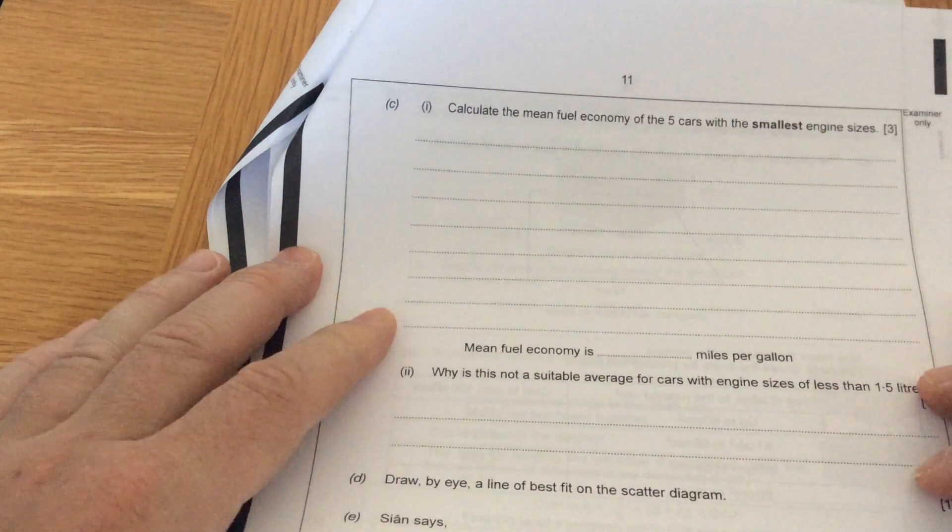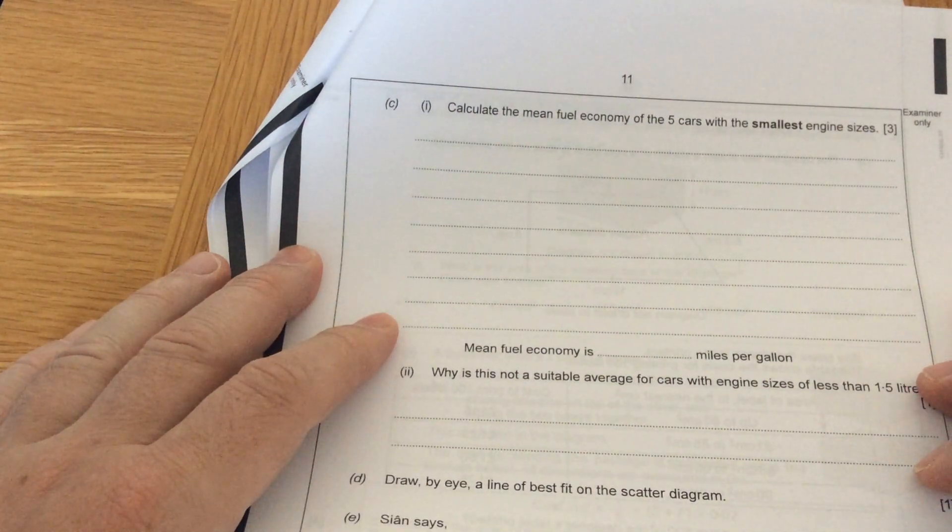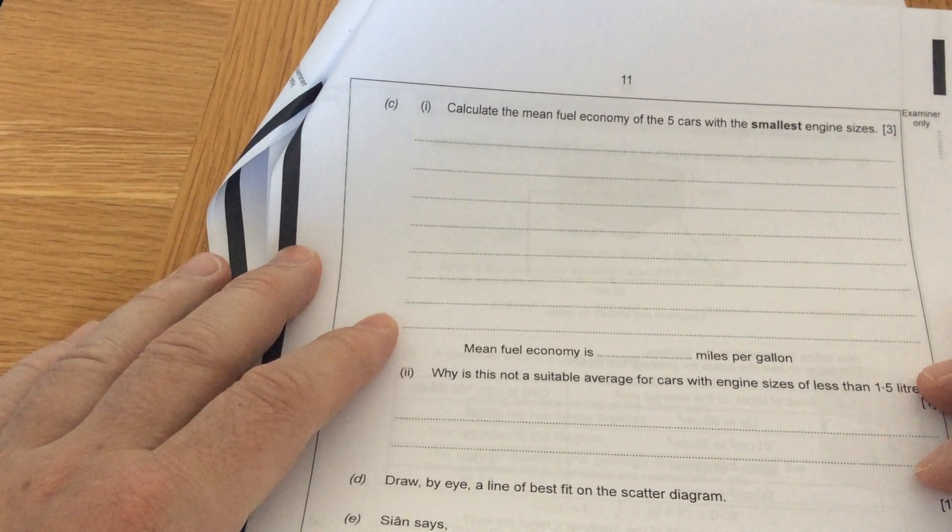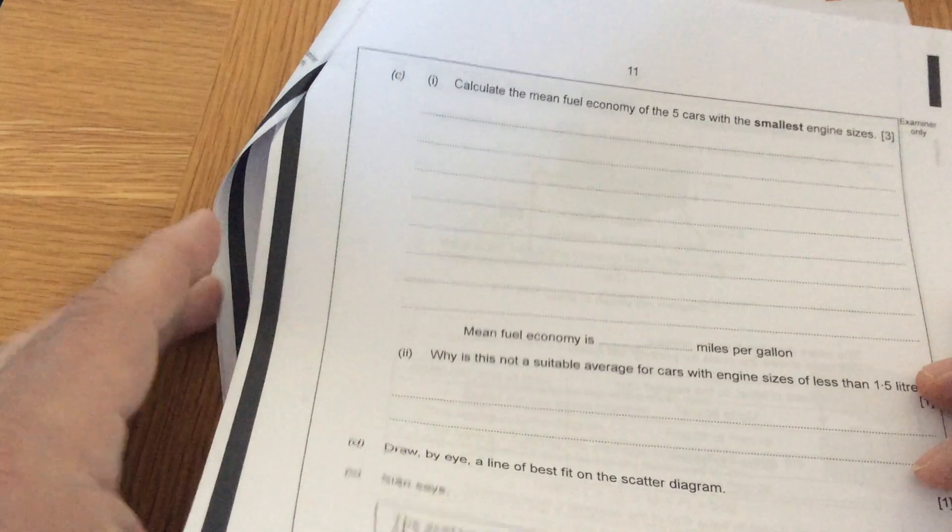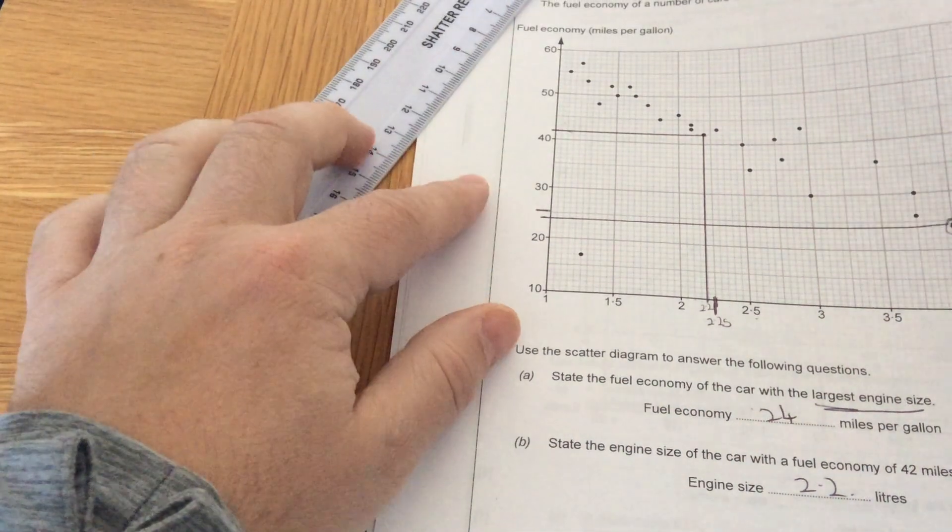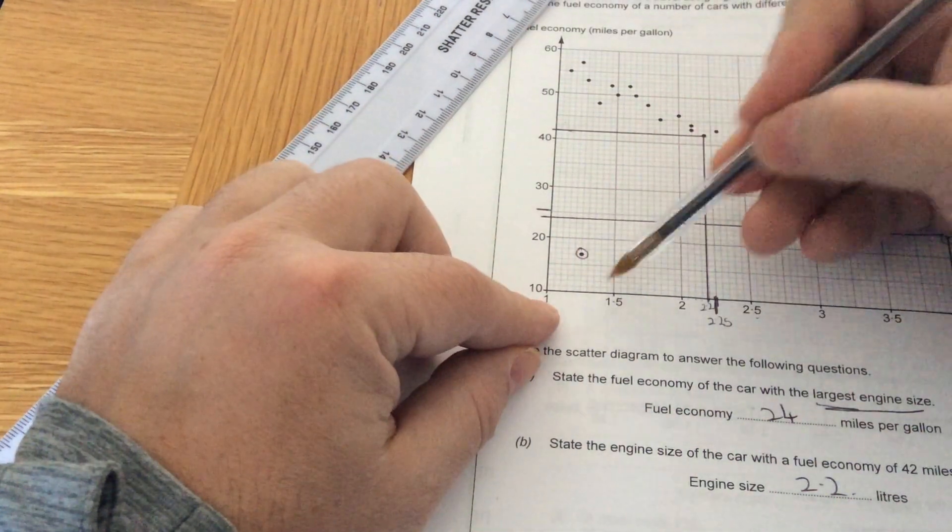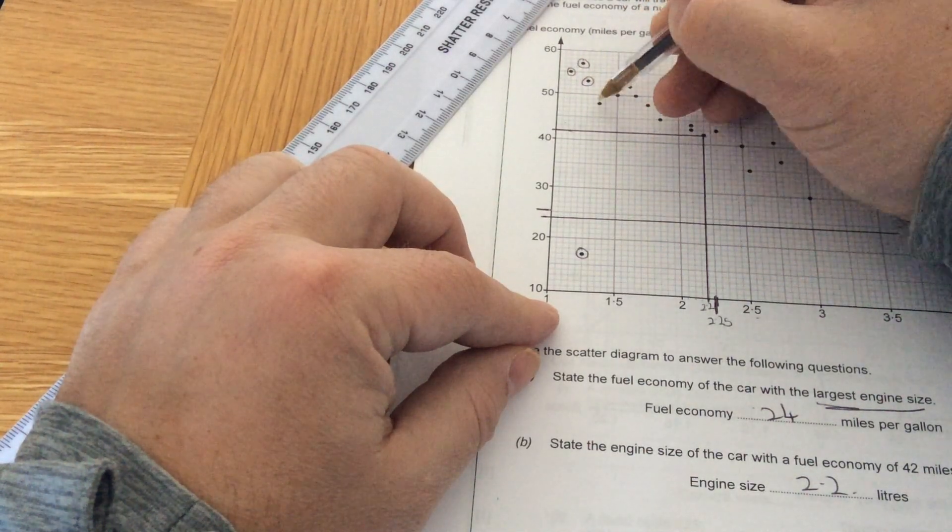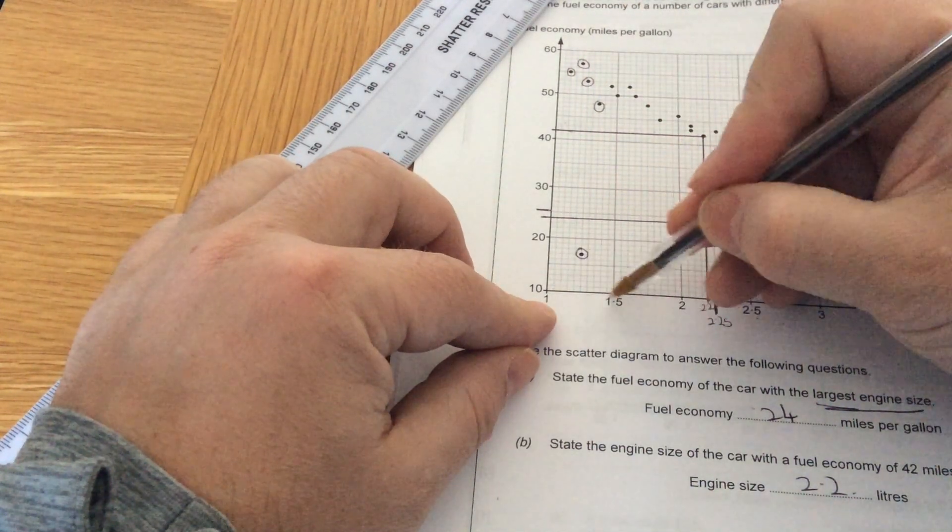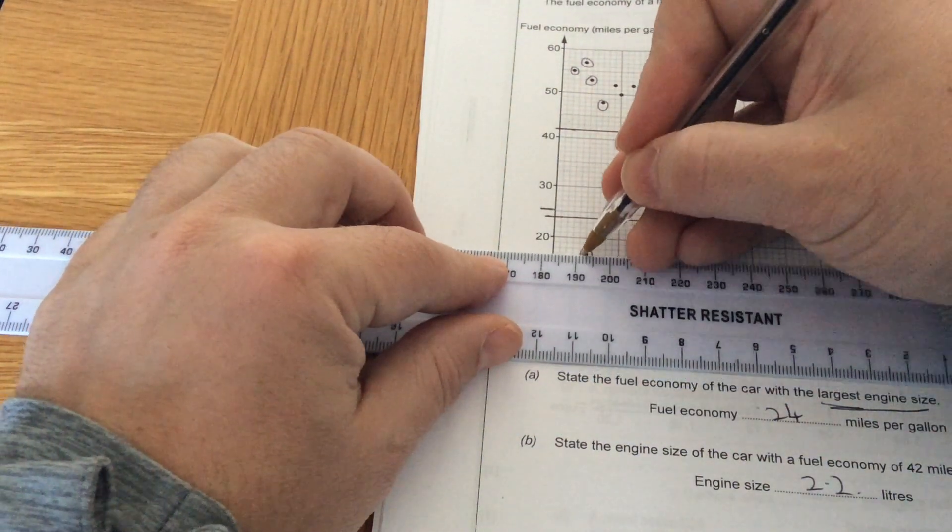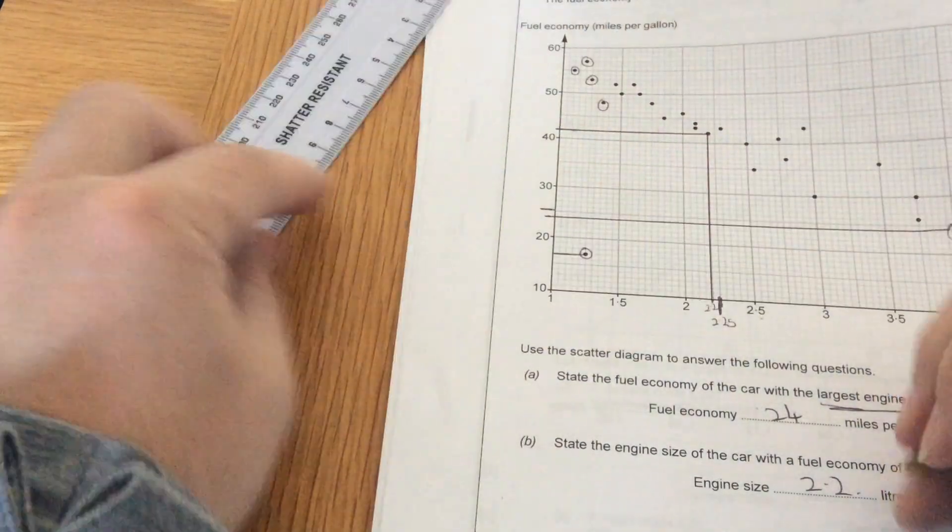Calculate the mean fuel economy of the 5 cars with the smallest engine sizes. Mean is you add them all up and divide by how many there are. So you're going to add up the 5. Look at the smallest engine sizes. The smallest 5 engine sizes would be this one, this one, 2, 3, 4 and 5, because they are all below 1.5. So they want to find the mean fuel economy. So this first one here.